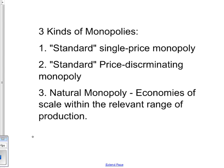And then we'll talk about natural monopolies. The difference between natural and what I'm calling standard monopolies is the natural monopoly has economies of scale within the relevant range of production. Therefore, it's cheaper from society's point of view to just have one producer.